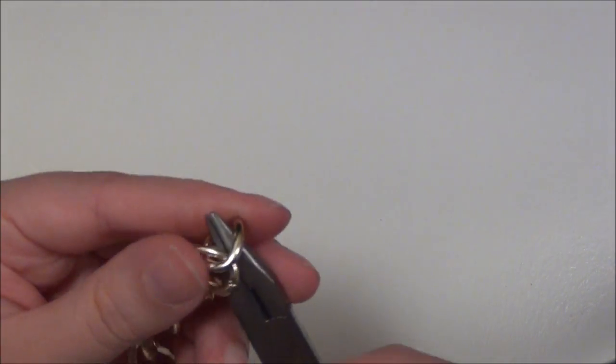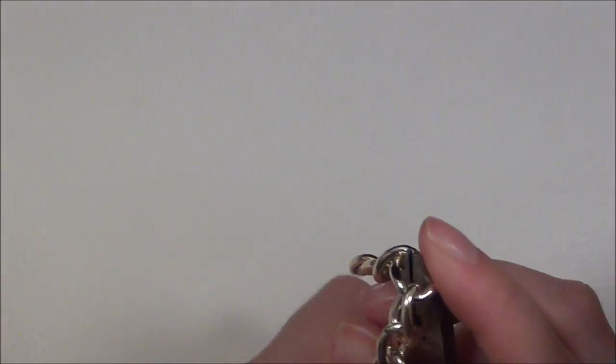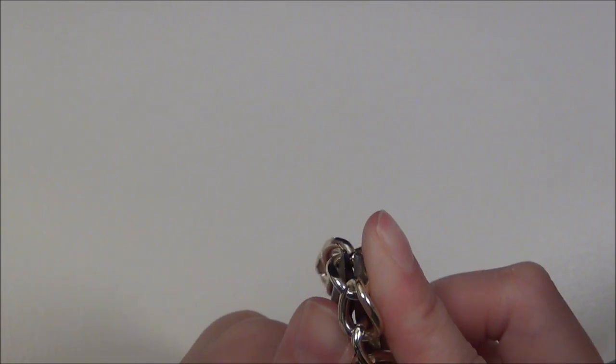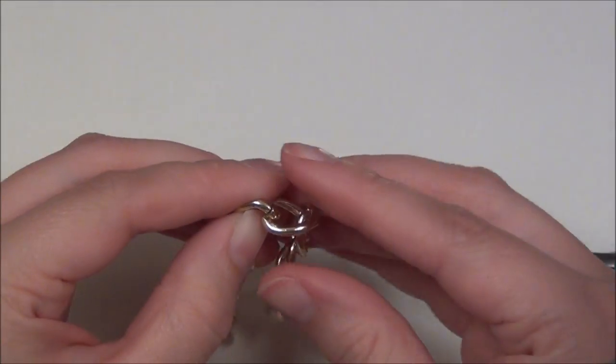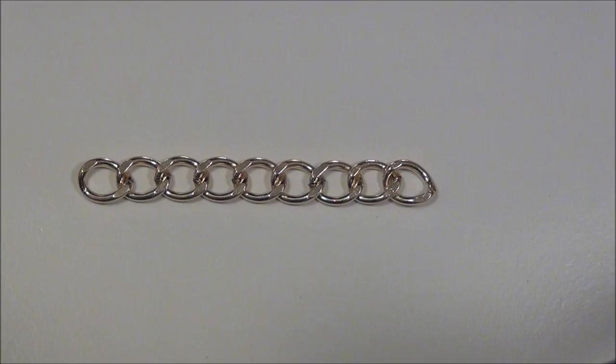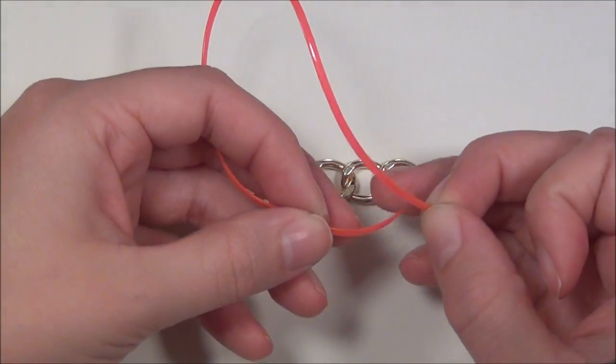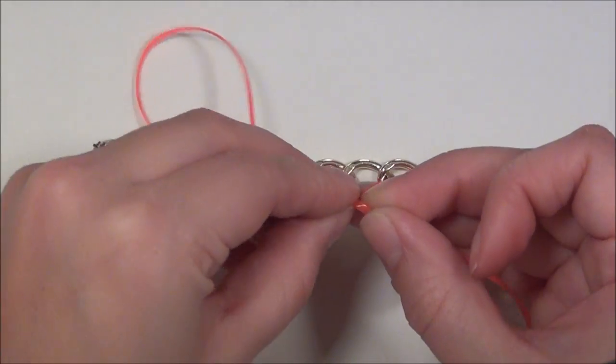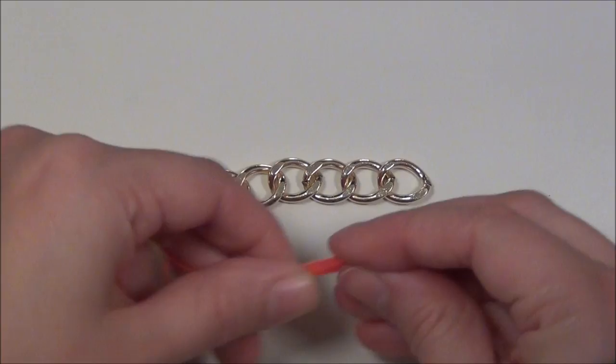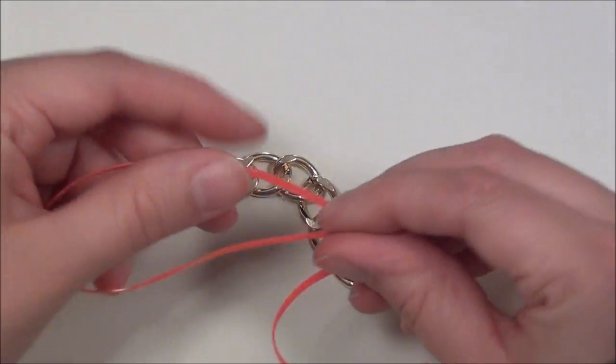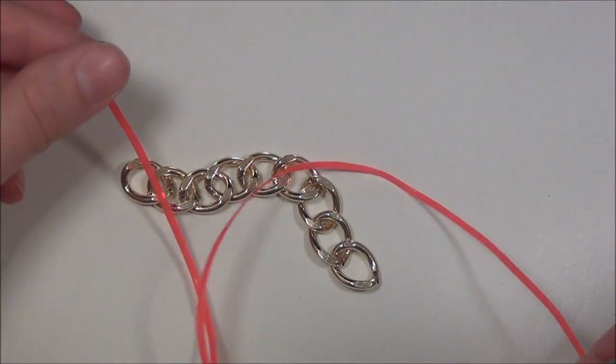And to do that, I'm just going to open up these pliers inside the first link that I'm not using. And you still have the measure of how big your bracelet's going to be, so you're going to need one and a half times this measurement. And this is going to be the base string that you're going to be weaving onto.